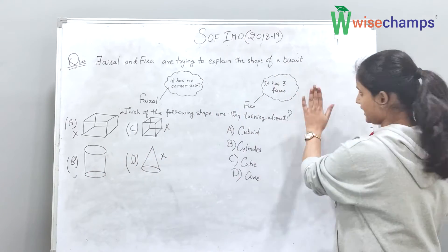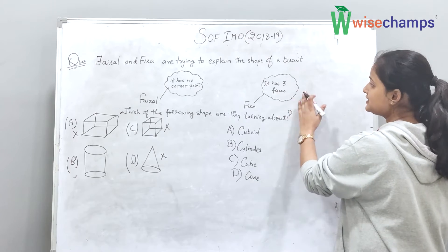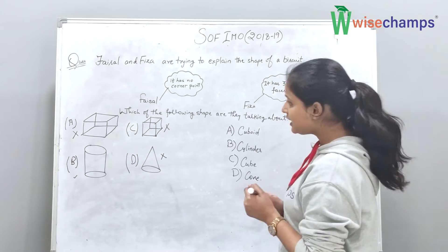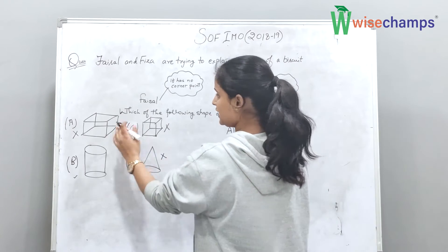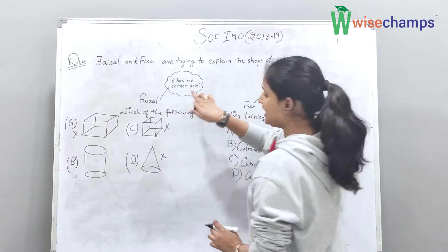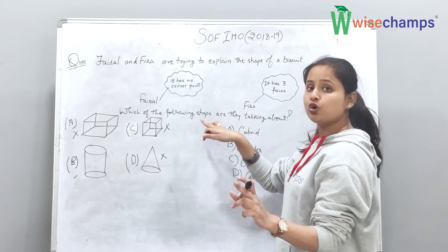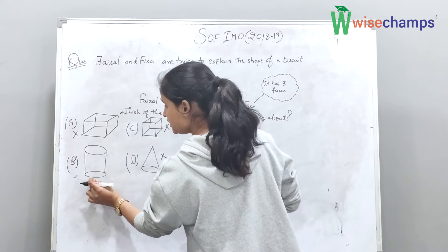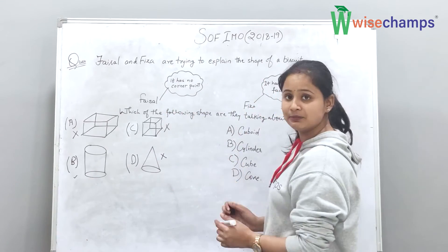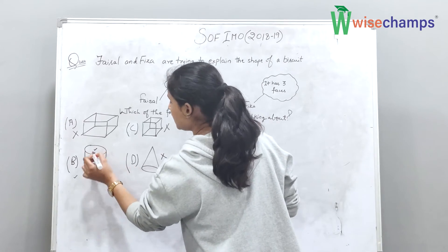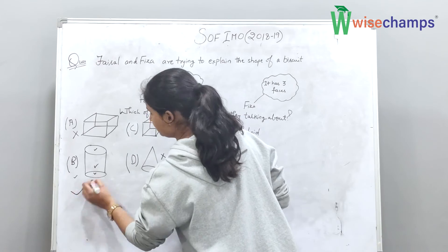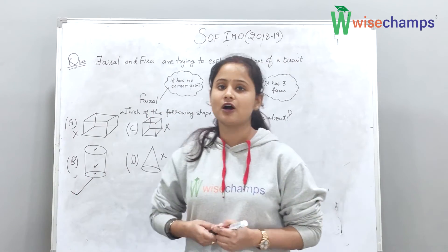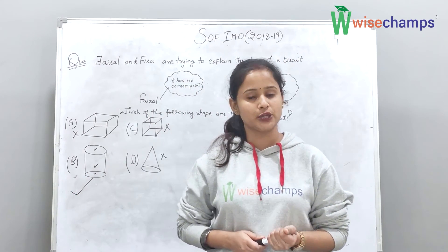Now come to the second condition, it has three faces. We will check which shape has three faces. As you know that these three options did not match the first condition. That means our B option will be correct, because it has three faces also. One, two, three. So our correct option is B.